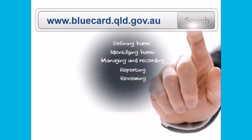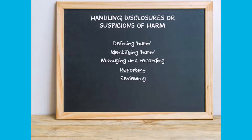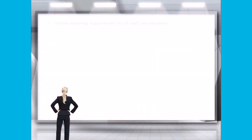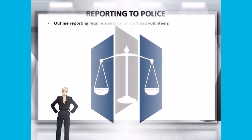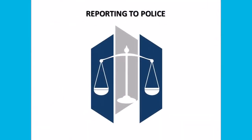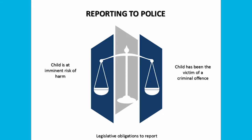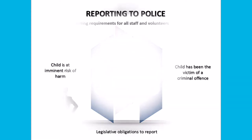Your organisation should also document clear policies in relation to reporting a disclosure or suspicion of harm. Your risk management strategy should outline reporting requirements for all staff and volunteers. Everyone has a responsibility regarding child protection, and your policy should be clear about the circumstances in which a report should be made to the police — for example, where a child is at imminent risk of harm or a child has been the victim of a criminal offence. You should also ensure that you outline any applicable legislative obligations to report matters to police which apply to individuals working in your organisation.